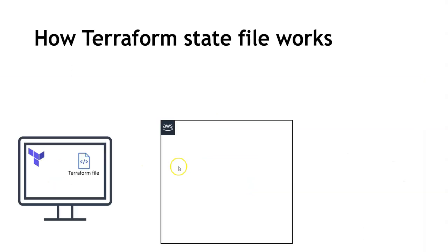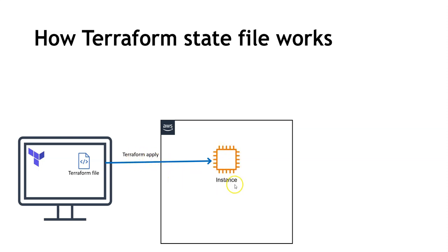Now let's move on to the Terraform state file. Here's how our environment is defined: we have a local system with Terraform installed and a Terraform file, and we have AWS. Whenever we run terraform plan and then terraform apply, it's going to create an EC2 instance — the 'demo server' we defined. When the instance is created, its related information from AWS gets stored in the Terraform state file.